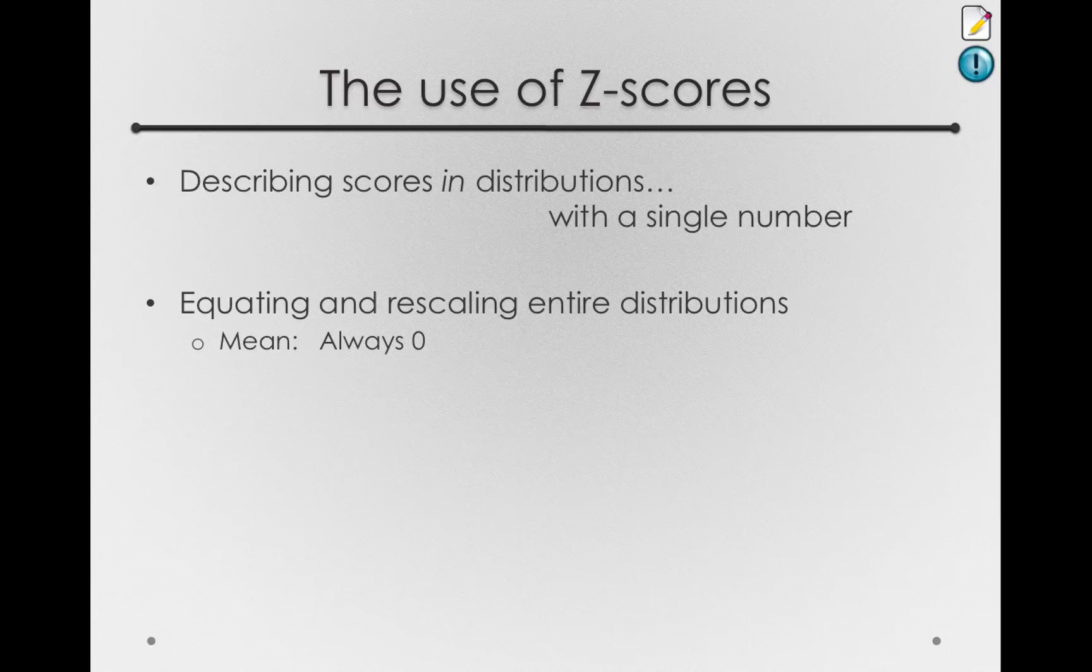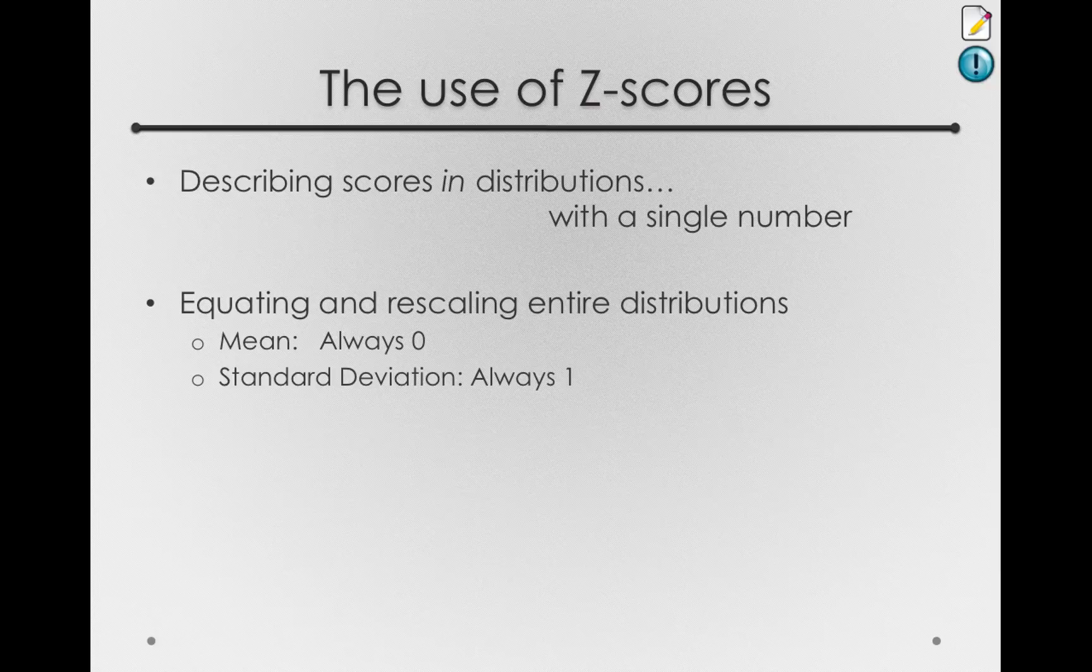Second, when you rescale an entire distribution, the standard deviation of the resulting distribution, that is, the z-score distribution, will always be 1. We can use the same logic as we did for the mean.